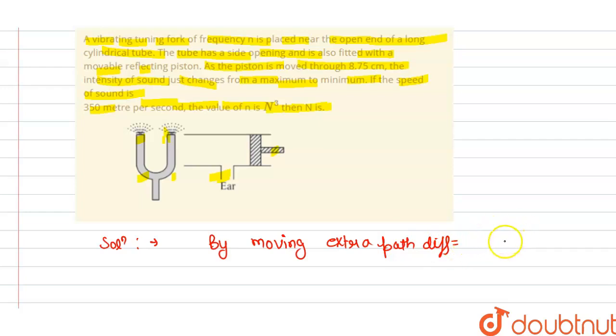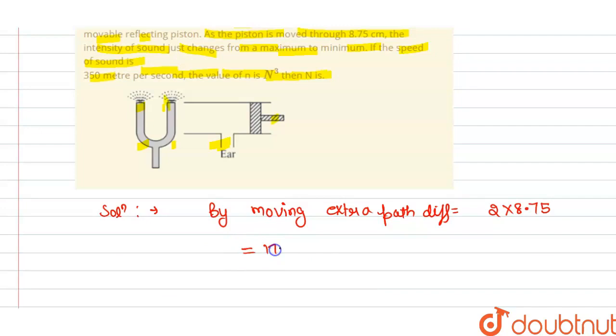...equals 2 times 2 times 8.75. So we get the path difference is equal to 17.5 centimeter.